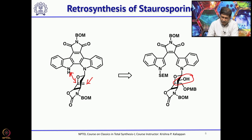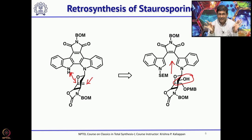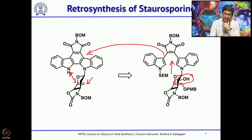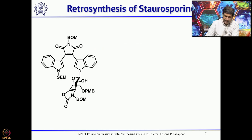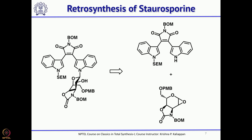Now the two indole portions can be clearly seen. This can be cyclized through a combination of electrocyclic reaction followed by aromatization, and this can be easily made from two fragments: one from the bisindole moiety, and the other derived from the sugar moiety, basically from glucose.